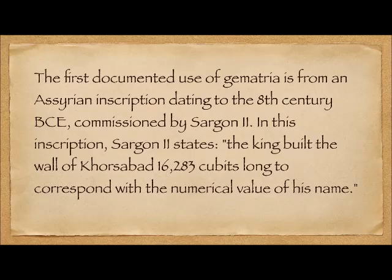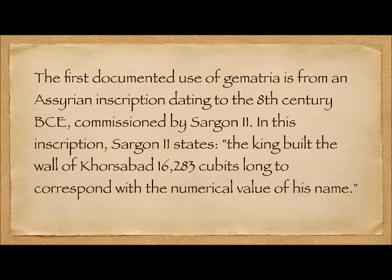The first documented use of gematria is from an Assyrian inscription dating to the 8th century BCE, commissioned by Sargon II. In this inscription, Sargon states the king built the wall of Horsabad 16,283 cubits long, to correspond with the numerical value of his name.